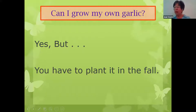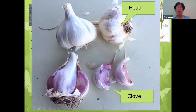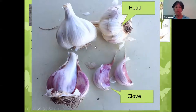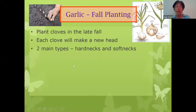Can I grow my own garlic? Yes, but you have to plant it in the fall. When you go to the grocery store and you buy garlic, you buy a head — that big thing is a head — and then you break it apart to cook with it, and these pieces are cloves. When you plant garlic, you're actually going to plant the cloves, and you're planting them in the late fall.